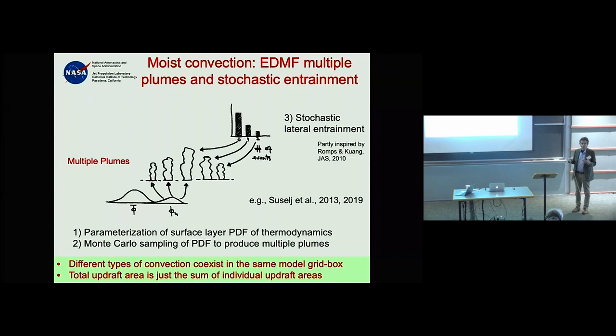Traditionally, parameterizations have sequential triggers moving from one convection type to another. The goal of our unified approach is to allow different types of convection to co-exist: some plumes do dry mixing, others do shallow convection, others deep convection, just as the atmosphere allows it to be.